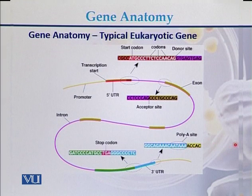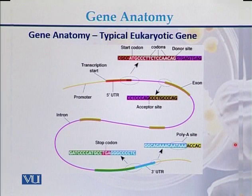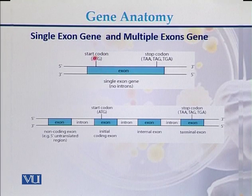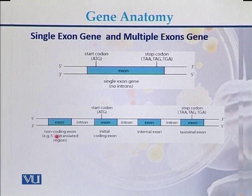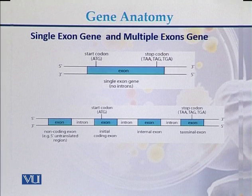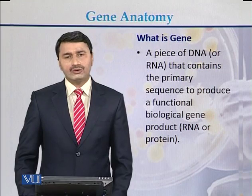Comparing the prokaryotic gene and the eukaryotic gene: the prokaryotic gene is simple with no introns, while eukaryotic genes have exons and introns. There is also a comparison between single exon genes and multiple exon genes. A single exon gene has a start codon, a stop codon, and consists of only one exon. In multiple exon genes there are alternating exons and introns, with more than one exon present.